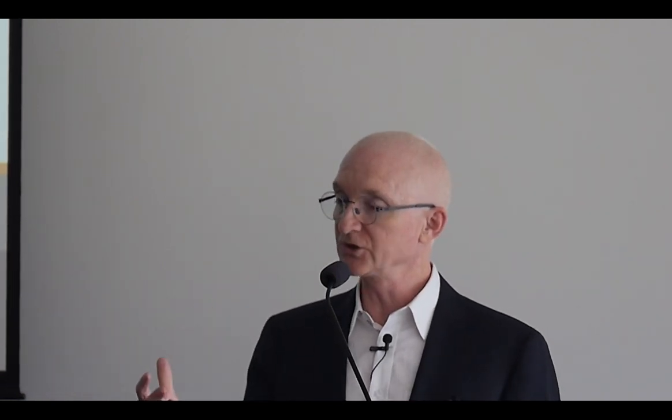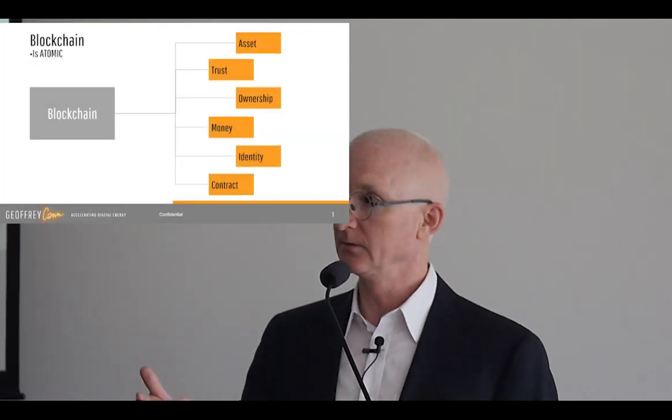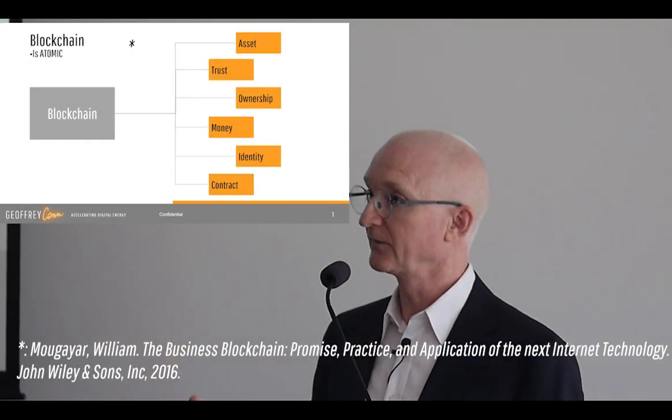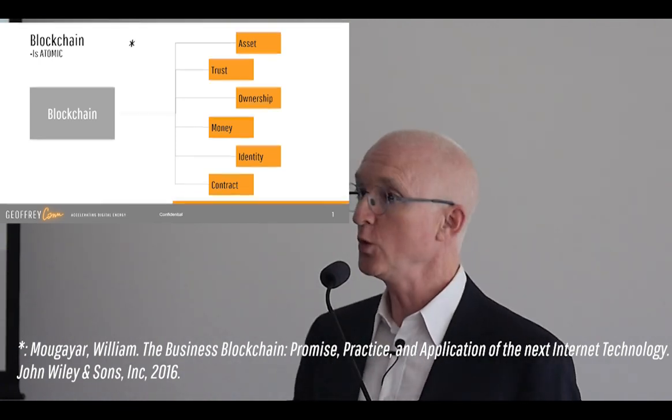Here's a simple mnemonic to think about where blockchain technology will have a role to play in our social, human, and physical world: ATOMIC. A — Assets. T — Trust. O — Ownership. M — Money. I — Identity. C — Contract. If you have one or several of these elements at play and a business problem you're wrestling with, that business problem is amenable to a blockchain solution.